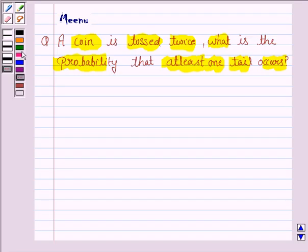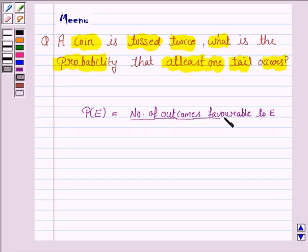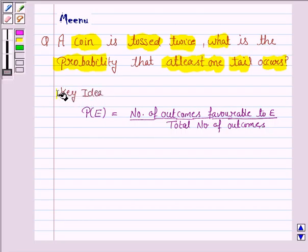Before moving on to the solution, let us first understand the formula for the probability of any event E. The probability of any event E is given by number of outcomes favorable to E upon the total number of outcomes. So, this knowledge will work as key idea.